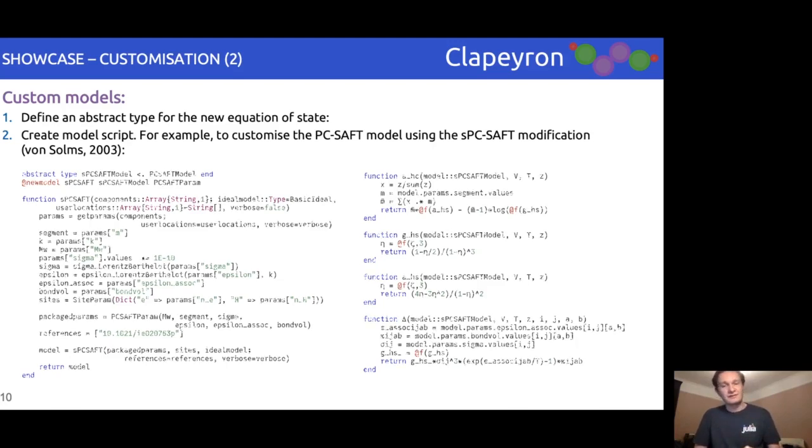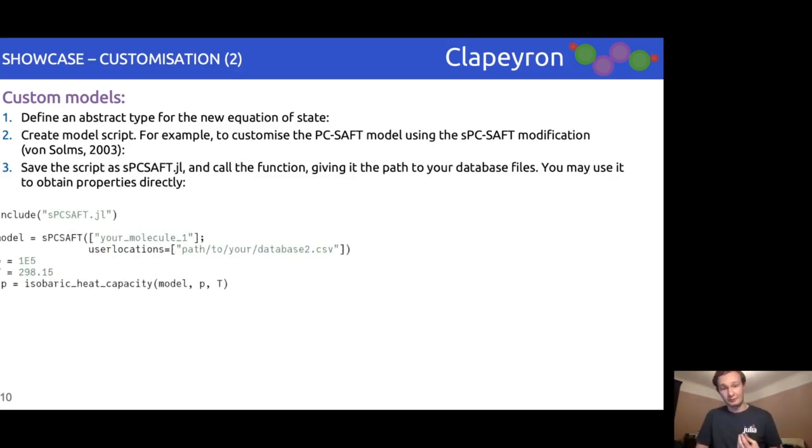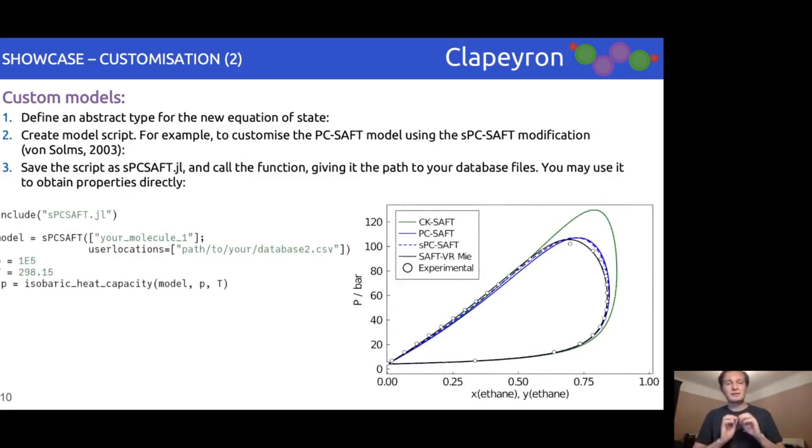And with these equations defined, we can save the script as a new equation of state, call it specifying the database path should we wish to use our own parameters, and all other Clapeyron features should be available right away.